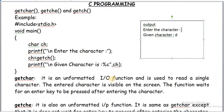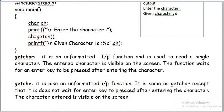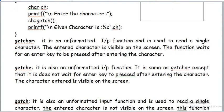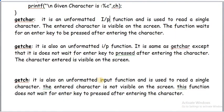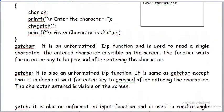getchar is an unformatted input function used to read a single character; the entered character is visible on the screen and the function waits for an enter key to be pressed after entering the character. For getch, the difference from getchar is that it does not wait for enter key and the given character is not visible on the screen. getch is also an unformatted input function used to read a single character; the entered character is not visible on the screen, and this function does not wait for enter key. These are the definitions and differences.